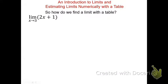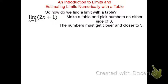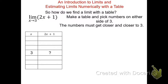Here's the limit we need to evaluate: the limit of 2x plus 1 as x approaches 3. In the table, we pick numbers on either side of 3 — numbers smaller and numbers bigger than 3 — and the numbers must get closer and closer to 3. It's usually a good idea to go a thousandth away, a hundredth away, and a tenth away on either side.